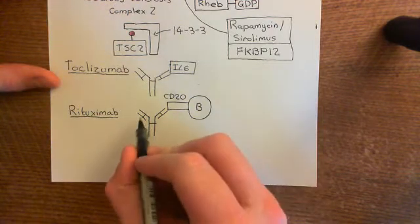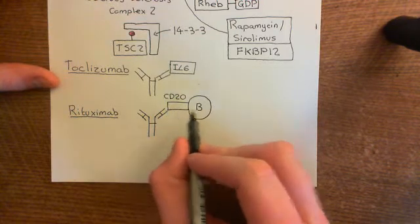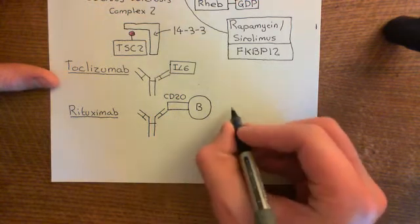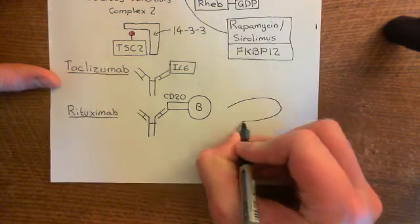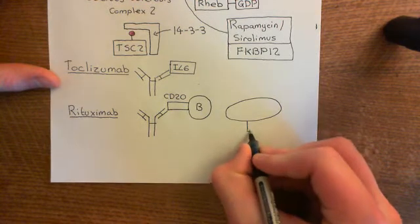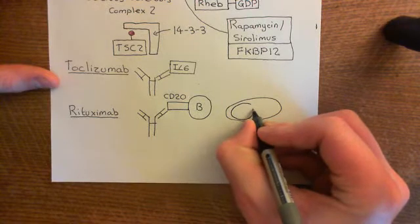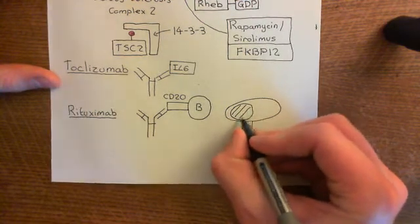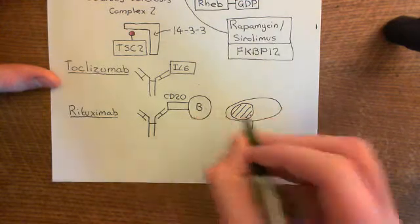This monoclonal antibody rituximab will bind to CD20 molecules on the surface of B-cells and also on the surface of plasma cells, which are the cells actually secreting antibody. Plasma cells have a much more oval shape because they have a large space for the production of antibodies, whereas B-cells just have a massive great nucleus.